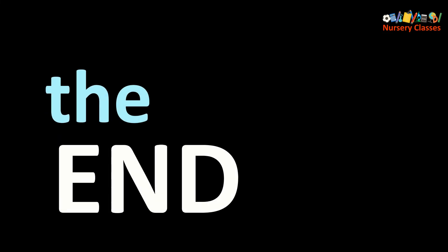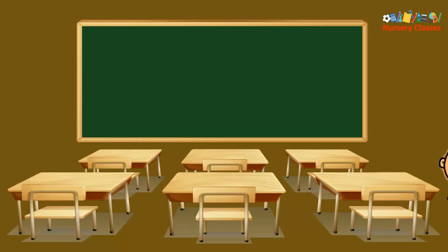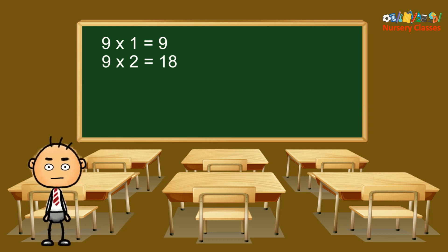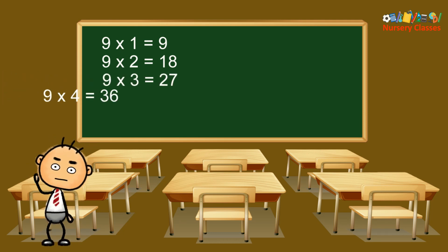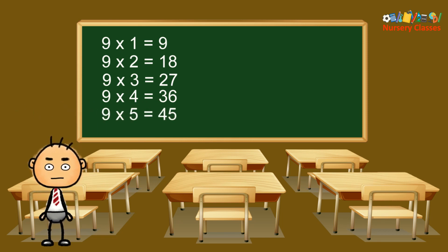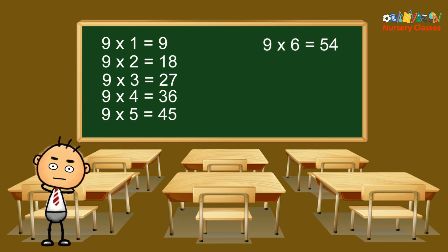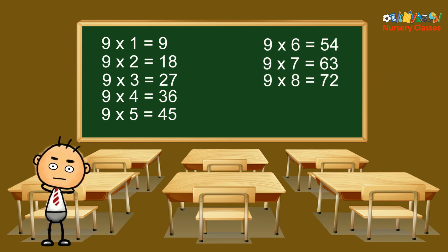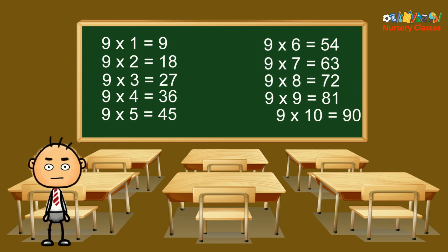9×1 equals 9, 9×2 equals 18, 9×3 equals 27, 9×4 equals 36, 9×5 equals 45, 9×6 equals 54, 9×7 equals 63, 9×8 equals 72, 9×9 equals 81, 9×10 equals 90.